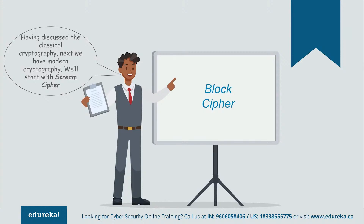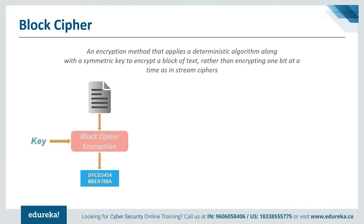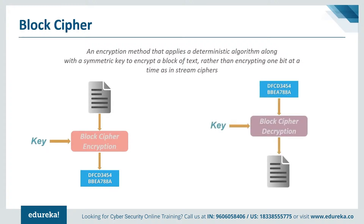A block cipher is an encryption method that applies a deterministic algorithm along with a symmetric key to encrypt a block of text, rather than encrypting one bit at a time as in stream ciphers. For example, a common block cipher AES encrypts 128-bit blocks with a key of predetermined length — either 128, 192, or 256 bits. Block ciphers are pseudo-random permutation families operating on a fixed size block of bits, and these PRPs are functions that cannot be differentiated from completely random permutations.